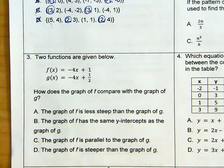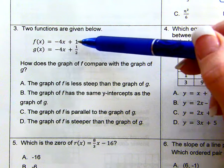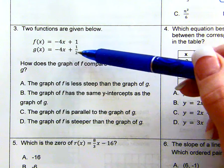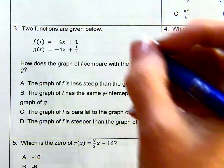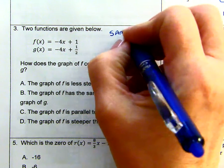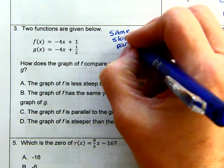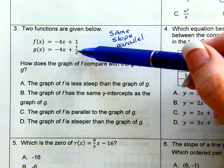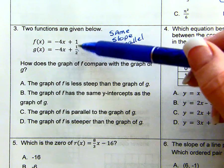Okay, for problem number 3, it says two functions are given below. We have f of x and g of x. f of x has a slope of negative 4 and a y-intercept of 1. g of x has a slope of negative 4 and a y-intercept of 1 half. So these two lines have the same slope, so they are parallel. And they have a different y-intercept. f is a half a unit above g. So f is over g, g is below f.